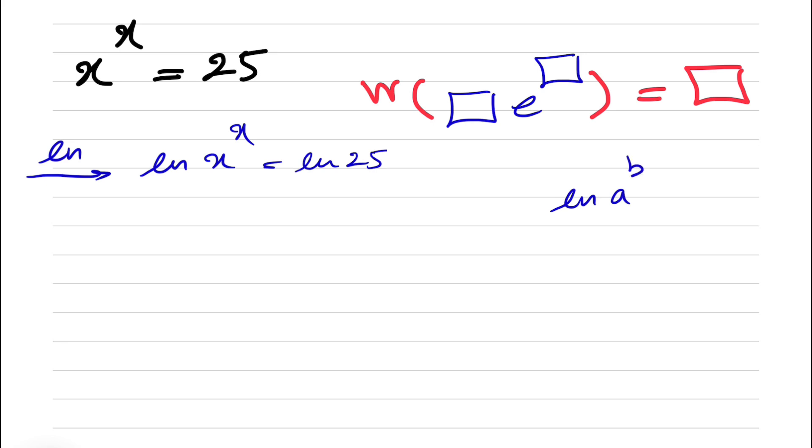From the laws of the logarithm, when we have ln of a to the b, this b likes to go in the back of the ln. So we have x times ln of x is equal to ln of 25.